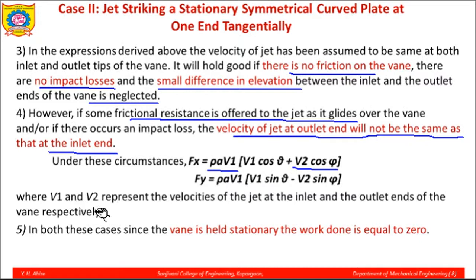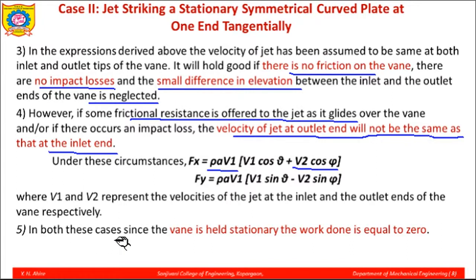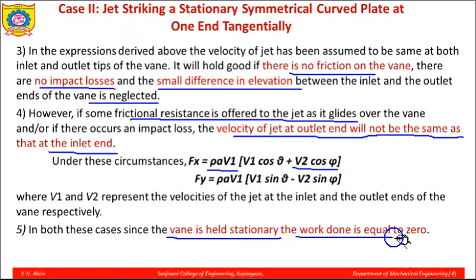V1 and V2 represent the velocities of the jet at inlet and outlet ends of the vane respectively. Since the vane is held stationary, the work done is equal to zero.